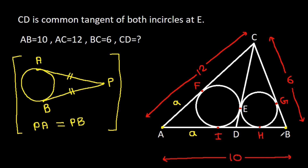From point B, if BH is 'b', then BG will also be 'b'. From point C, if CF is 'c', then CE will be 'c', and CG will also be 'c'. From point D, if DI is 'd', then DE will be 'd', and DH will also be 'd'.